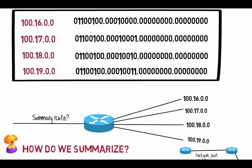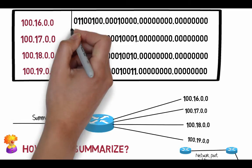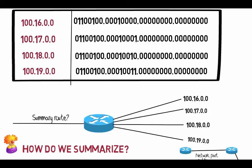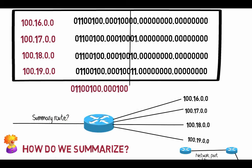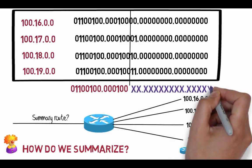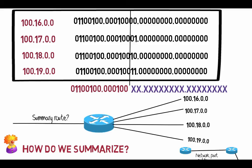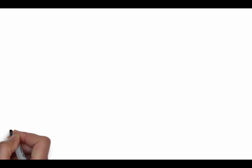We write down all the network addresses to be summarized: 100.16.0.0, 100.17.0.0, 100.18.0.0, and 100.19.0.0. Now we draw a line and move it along until we find the point where the network addresses start to change. At that point, on the left-hand side the addresses are all the same, and on the right-hand side they differ. We write out the new summarized network address based on the common left-hand portion, and ignore the rest.